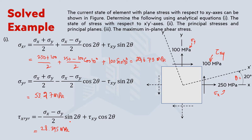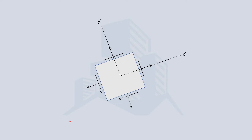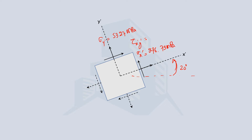We can now represent this state of stress on the element which is rotated 20 degrees counterclockwise. So sigma x' is 296.73 MPa, sigma y' is 53.27 MPa, and tau x'y' is 28.395 MPa.